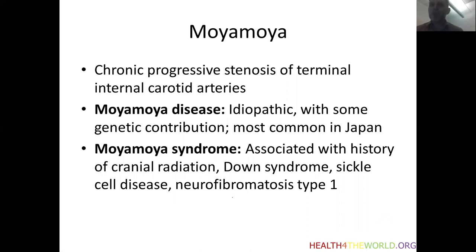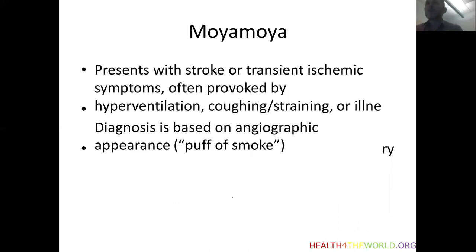In contrast, Moyamoya syndrome has the same clinical picture but is associated with certain well-defined syndromes. For example, cranial radiation can cause a Moyamoya-like syndrome. Moyamoya is also seen in Down syndrome, sickle cell disease, and in type 1 neurofibromatosis. Patients with Moyamoya often present with stroke or transient ischemic symptoms, which can be provoked by hyperventilation, coughing, straining, or illness.